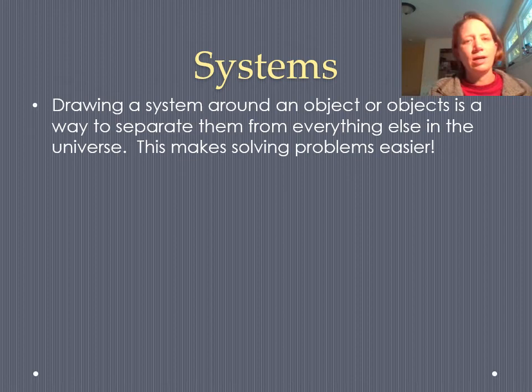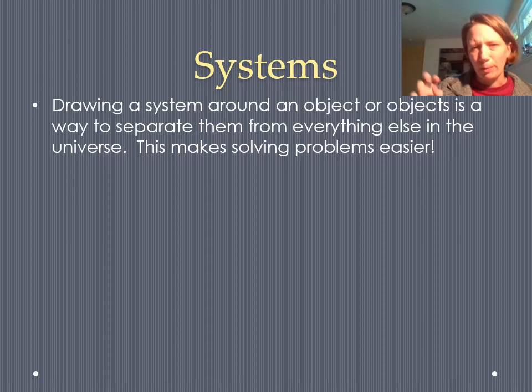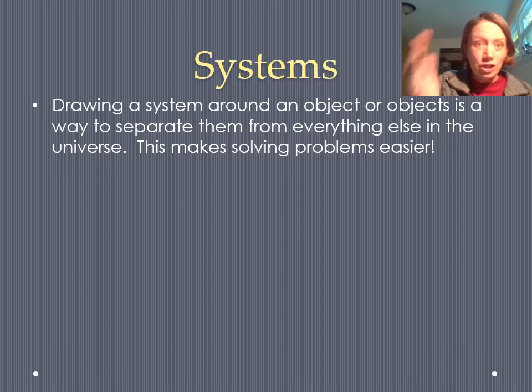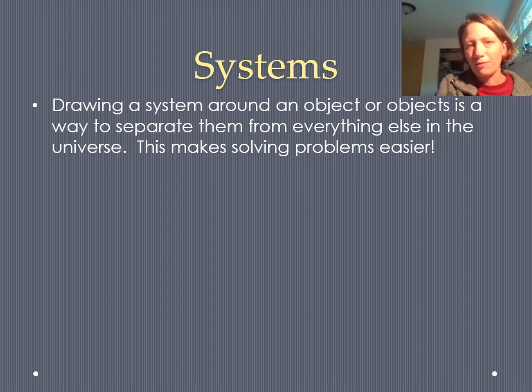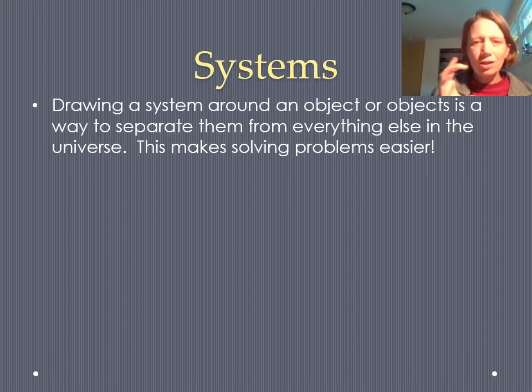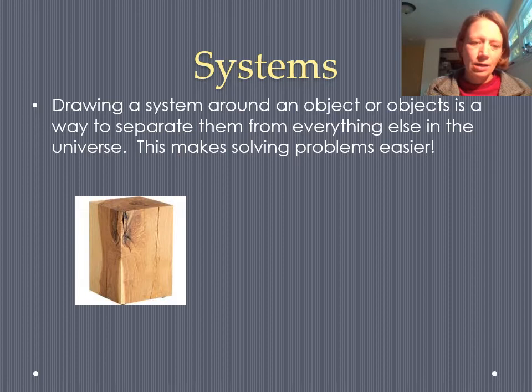When I start considering how to solve a problem in physics, one of the first steps I usually take as a professional physicist is to draw a system. Drawing a system is like an imaginary line or box around an object, separating that object from the rest of the world — because things are messy and the world is complicated. If I can isolate just the pieces I'm interested in, solving problems in physics becomes a lot easier.